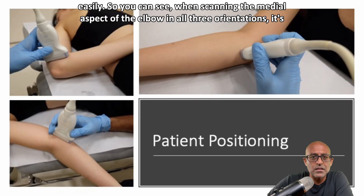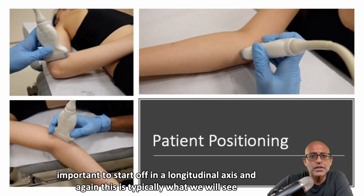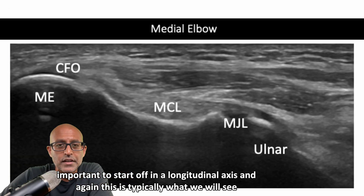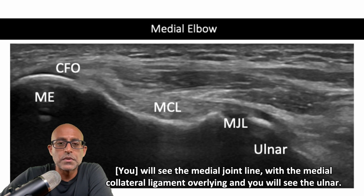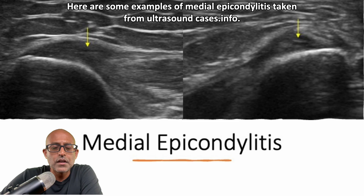When scanning the medial aspect of the elbow in all three orientations, it's important to start off in a longitudinal axis. This is typically what we will see: the medial epicondyle with the common flexor origin overlying, the medial joint line with the medial collateral ligament overlying, and the ulnar.